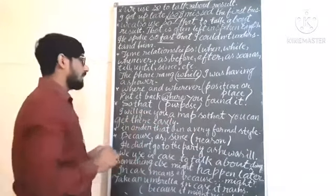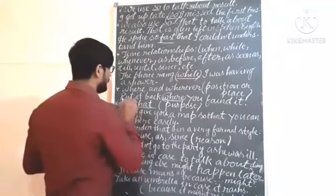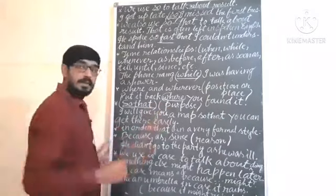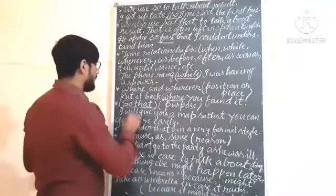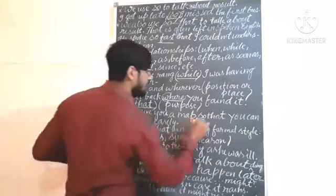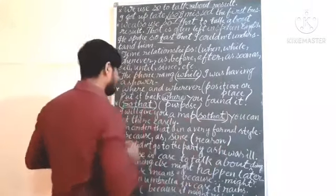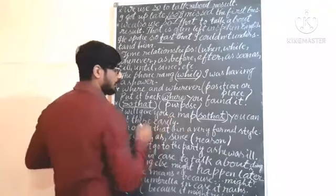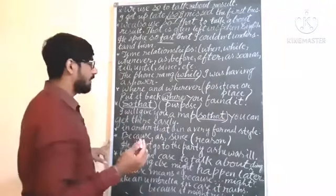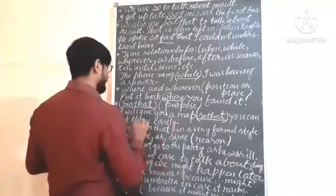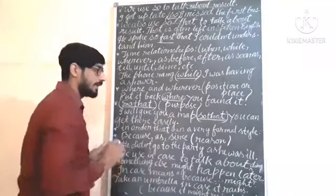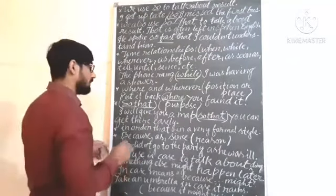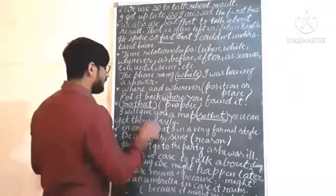Now, when 'so' and 'that' are combined together, 'so that' will be used for purpose, not result. See the example: 'I will give you a map so that you can get there easily.' Here 'so that' is used in a combined way. What is the purpose of giving the map? So that you can find the place easily.